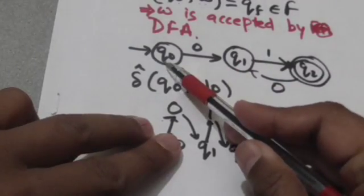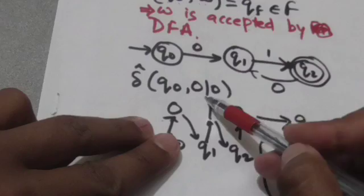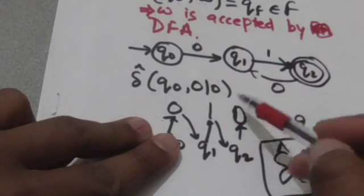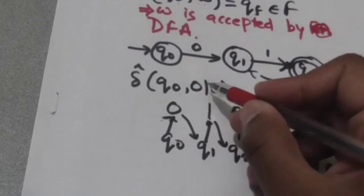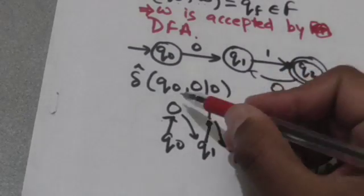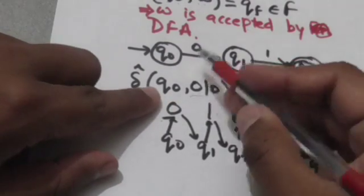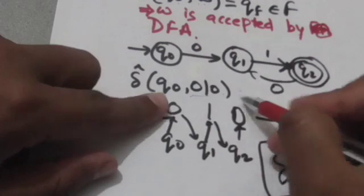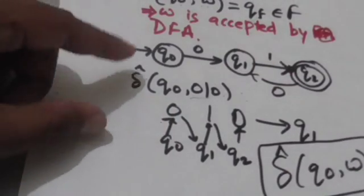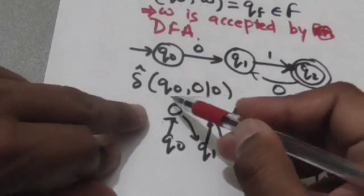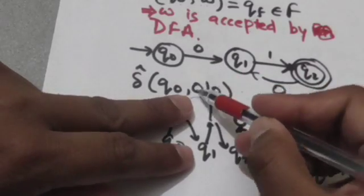Now suppose this is a DFA whose initial state is Q0 and its final state is Q2. We have to find out whether the string 010 is accepted by this DFA or not. We will apply this string 010 to its initial state, and if after reading this string the DFA jumps from its initial state to the final state, then this string will be accepted; otherwise it will be rejected. So we have to find out the output of the extended transition function for initial state Q0 and string 010.